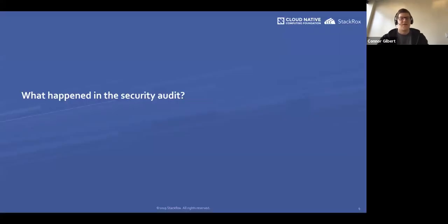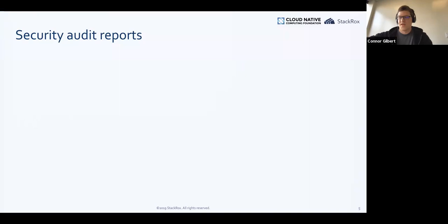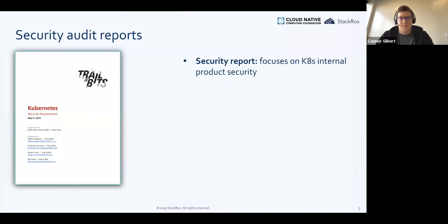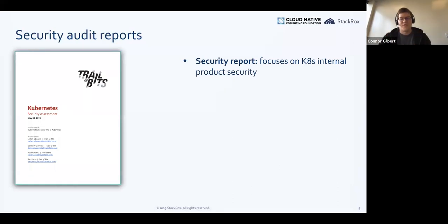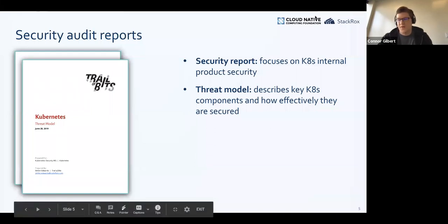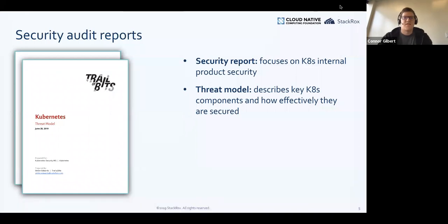So what happened in this security audit? It made a lot of headlines and there was a lot of news coverage. There were four main documents. First is the security report — the part most people have read — which focuses on Kubernetes product security itself: security bugs inside Kubernetes, problems in the codebase, the documentation, things like that. This is where the headlines about Kubernetes vulnerabilities came from.